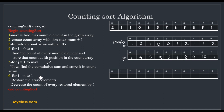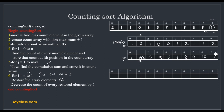The sixth step: for i equal to n minus 1 down to 0, restore the array element and decrease the count of every restored element by 1. This loop starts from i = n - 1, which is index 11. The element at index 11 is 1. We look up index 1 in the count array, which holds 4. We decrement it to 3 and store value 1 at output index 3. Next, a[10] is 9; count[9] is 12, so we decrement to 11 and store 9 at output index 11. Then a[9] is 8; count[8] is 10, decrement to 9, store 8 at output index 9.